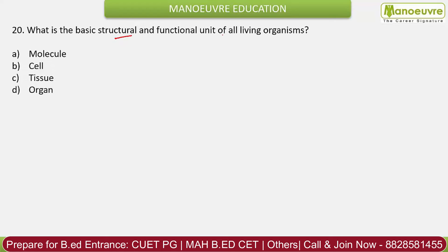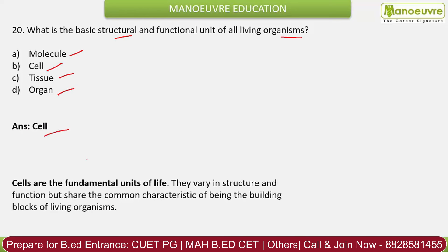Question 20: What is the basic structural and functional unit of all living organisms? Options: molecule, cell, tissue, organ. The correct answer is cell. Cells are the fundamental unit of life and the building blocks of living organisms. Cells were discovered by Robert Hooke. The nucleus within cells was discovered by Robert Brown.